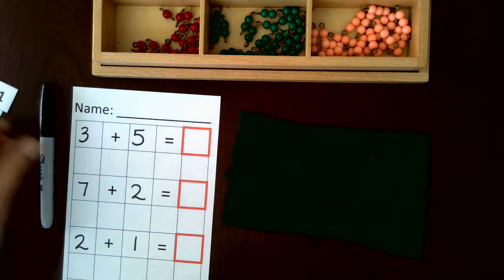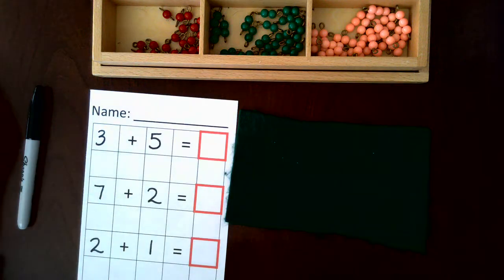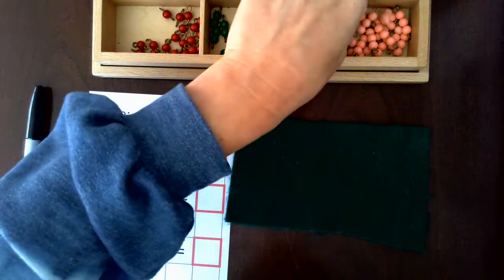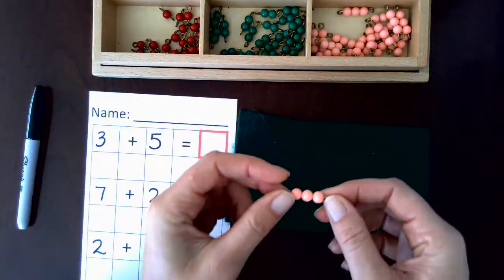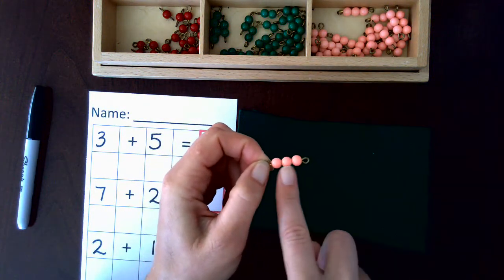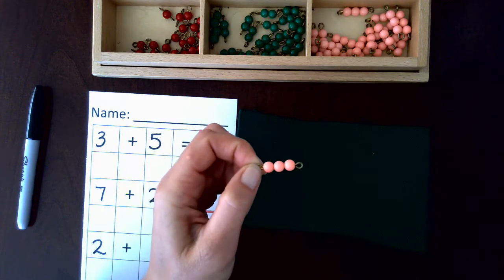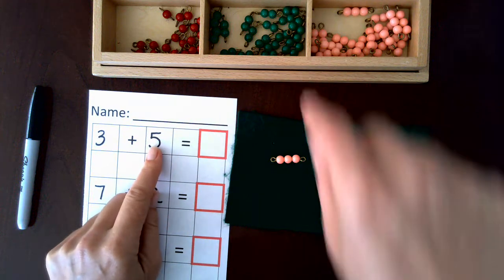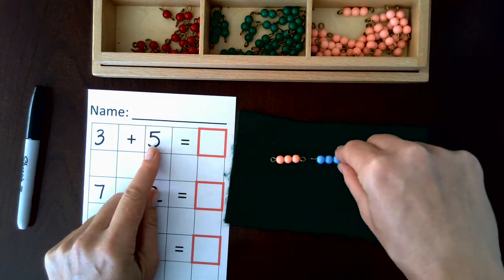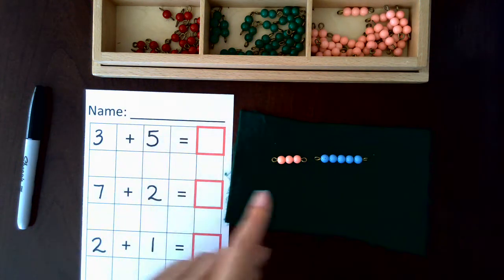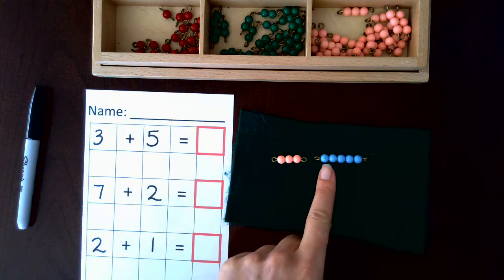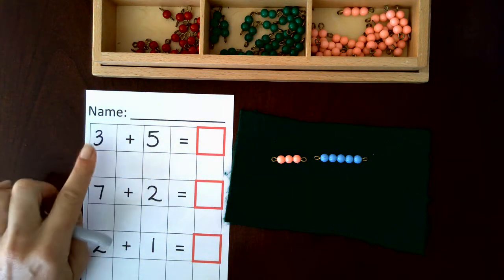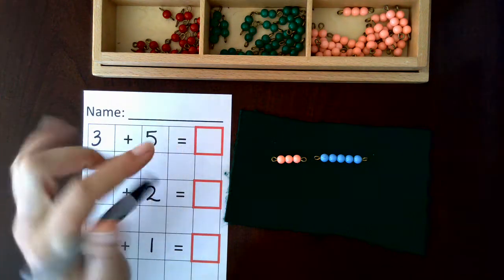To start the lesson, we have three and we're going to find the three. Now at first it's okay to count, but eventually the child will learn, oh, the pink bar is always three: one, two, three. Plus five. And then we add them together: three, four, five, six, seven, eight. Three plus five equals eight.